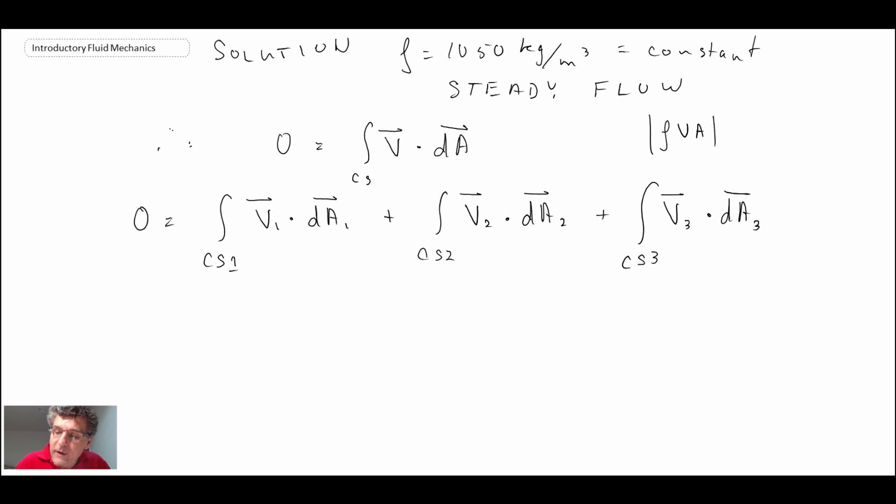However, before we do that, let's take a look at the direction because remember we have the dot product in each of these, and the dot product will let us determine whether it should be plus or minus, whether or not mass is coming into or leaving our control volume. We pretty much know it in this problem because it's pretty explicit, but let's look at it explicitly just to be certain.